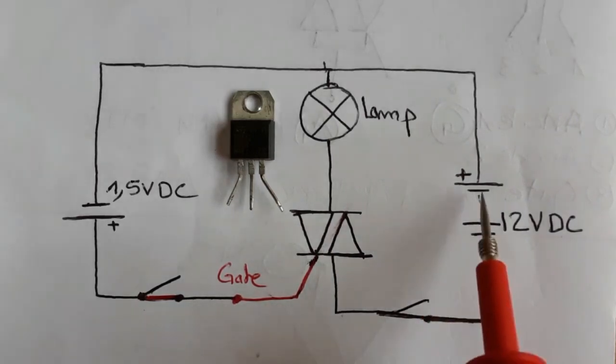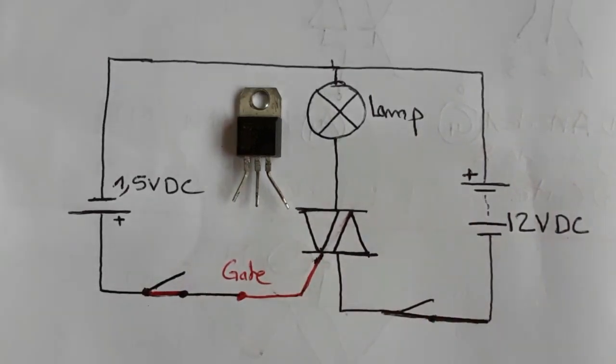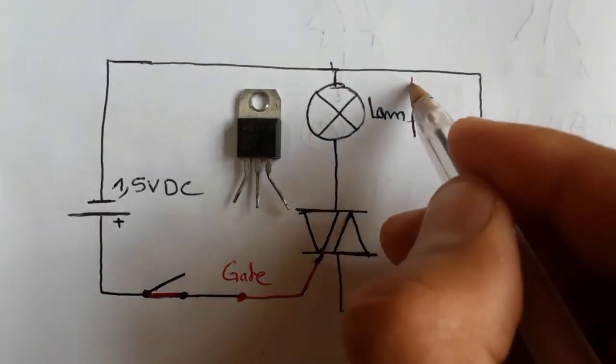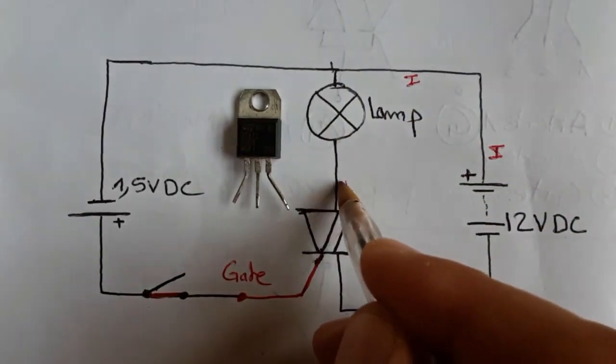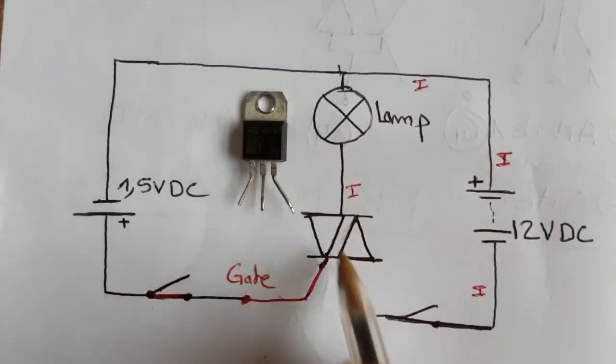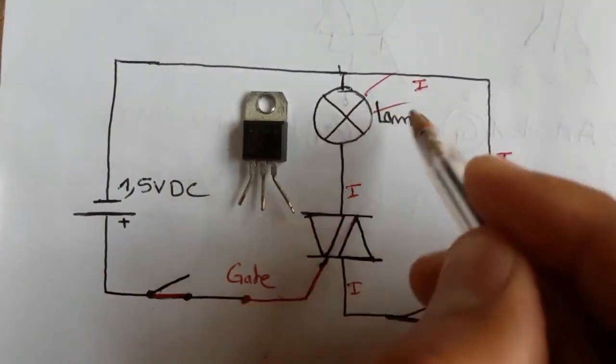So, the TRIAC has the same working principle, basically, as a transistor. Now, the current will circulate through the circuit and will pass through the TRIAC. And then, of course, the lamp will be lit.